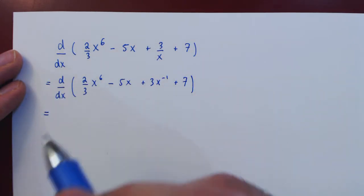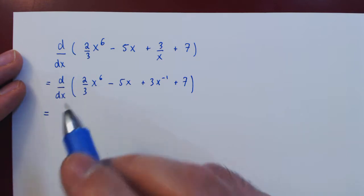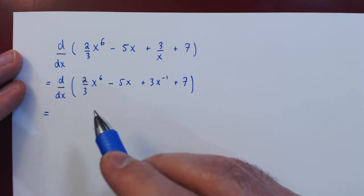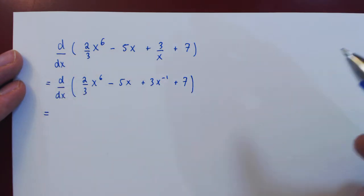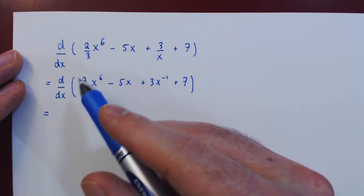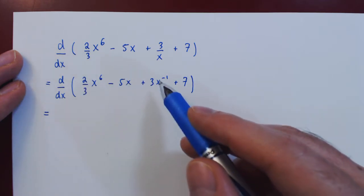So the sum-difference rule of differentiation is very simple. It says if you have a sum and or difference of functions, and you want to take the derivative of this sum and or difference, you simply have to differentiate each function individually.